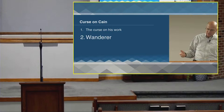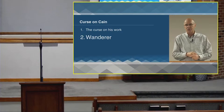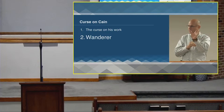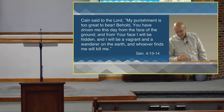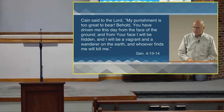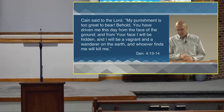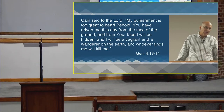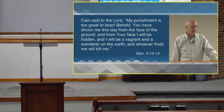Perhaps a reason for this punishment is that Cain would be a visible reminder of the effects of sin and God's justice. Speculating — but if you're asking why did God allow him to live, perhaps as a sign to others. Verse 13: 'Cain said to the Lord, my punishment is too great to bear. Behold, you have driven me this day from the face of the ground, and from your face I will be hidden, and I will be a vagrant and a wanderer on the earth, and whoever finds me will kill me.' Finally, the curse gets Cain's attention.